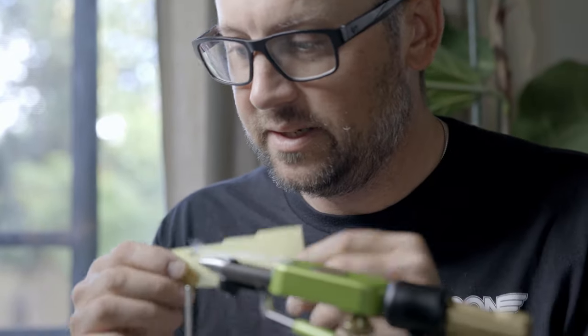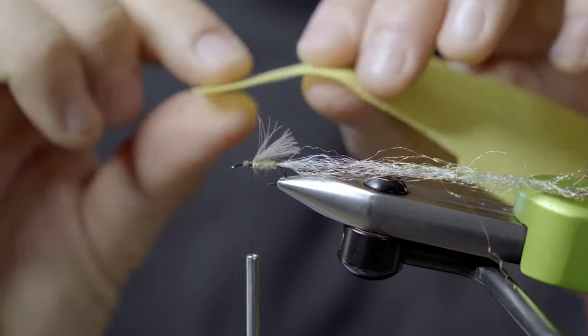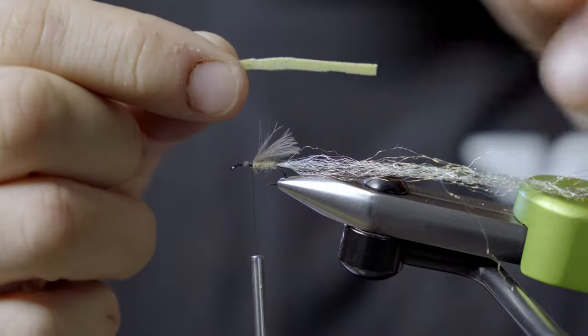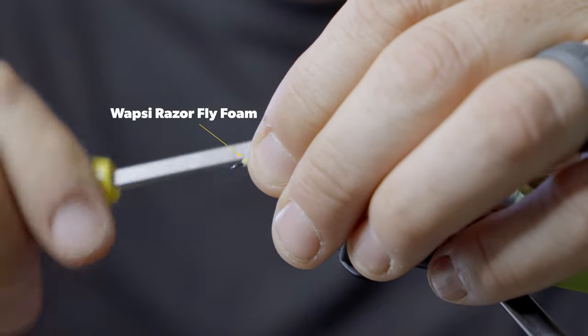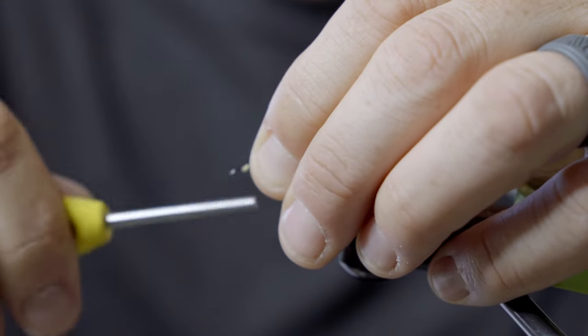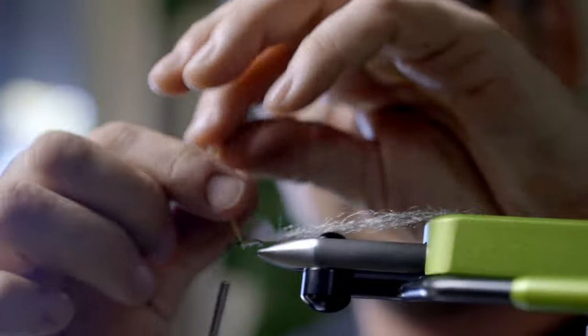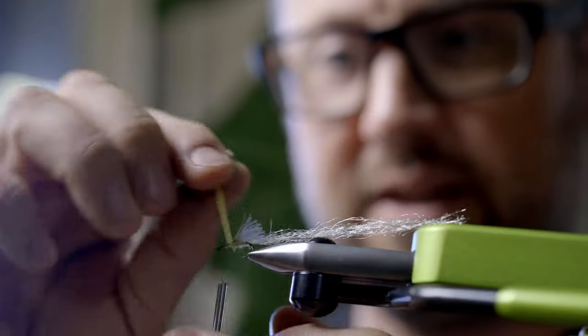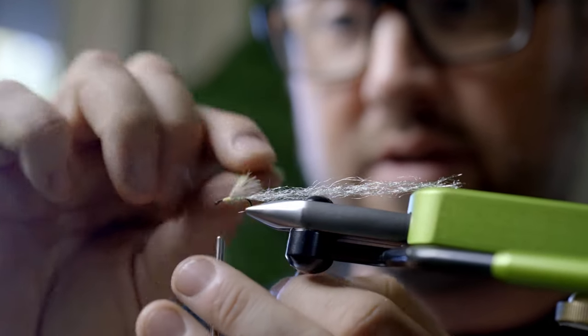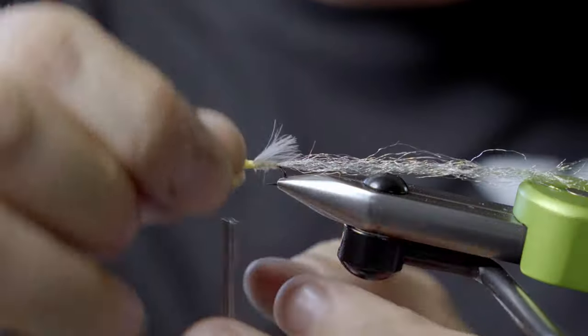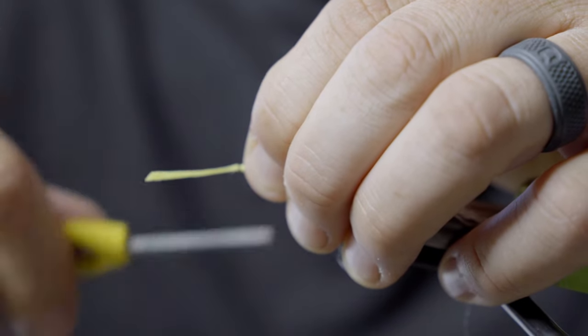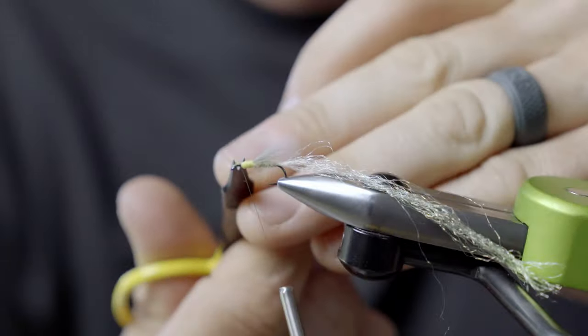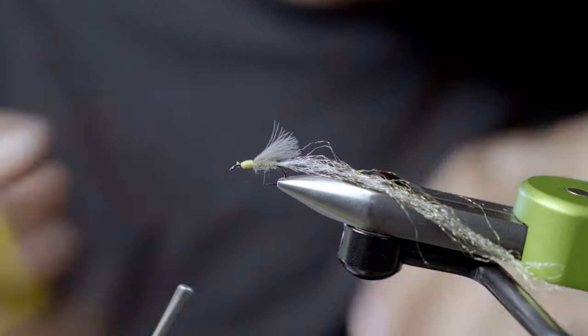Next, I'm going to take a piece of razor foam, this nice thin foam. I cut a nice thin piece, and again, you can mix up colors on this if you want to do some chartreuse or a hot spot in here using this foam. It's a great thing to do. I'm just going to palmer this around, then tape it off, give it a nice little taper with that foam, trim it.